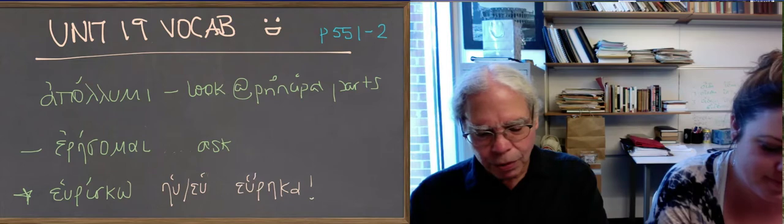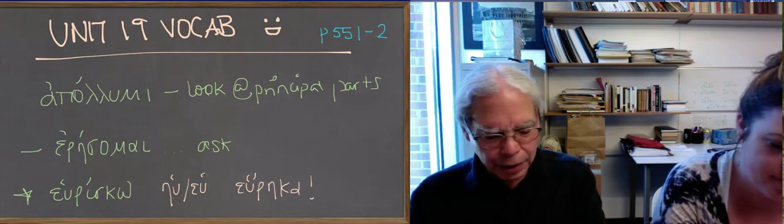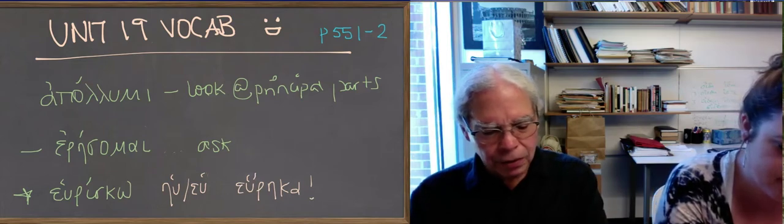Heos is one of the two words for as long as, or while, or until. The other being mekri, syntax we've talked about.